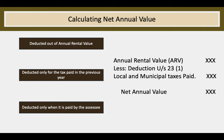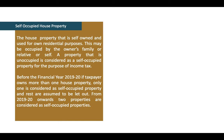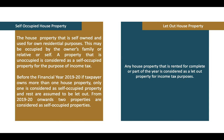Self-occupied house property is the property occupied by the owner or his relatives. Before financial year 2019-20, an assessee could have only one self-occupied house property. The Finance Bill 2019 paved the way for an assessee to have two self-occupied house properties. If an assessee has more than two self-occupied house properties, the other houses are deemed to be let out. Let-out house property is the property let out to a tenant from whom rent is collected — that rent is taxable under income from house property.